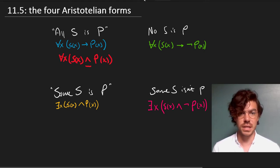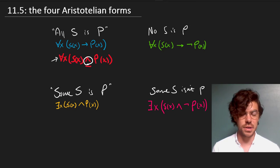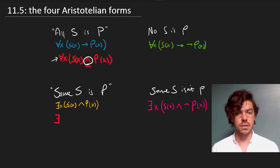If we were talking about the correct version, we'd say everything is such that if it's a dog then it's a mammal—that seems true. But the wrong sentence says everything is an S and a P, so everything is a dog and a mammal, which is obviously not true.